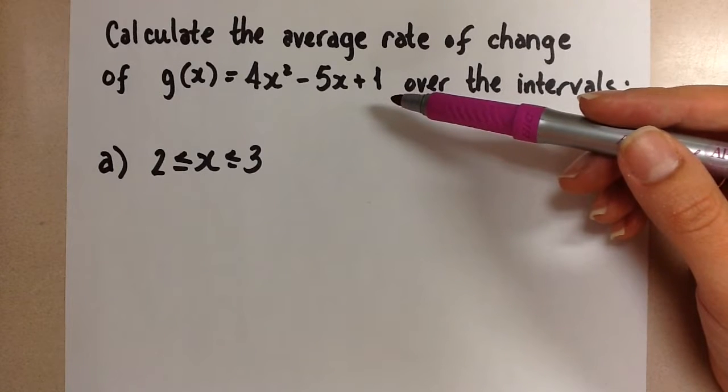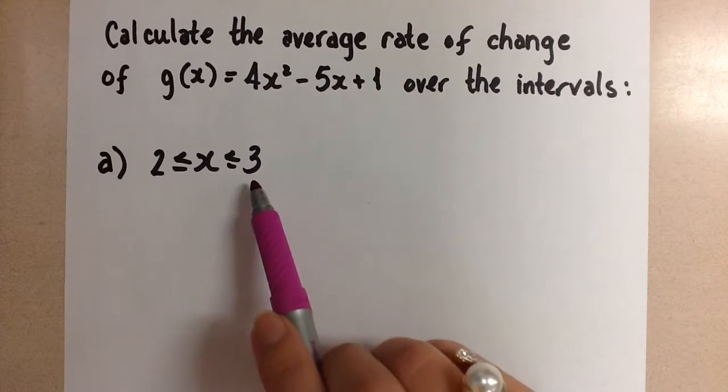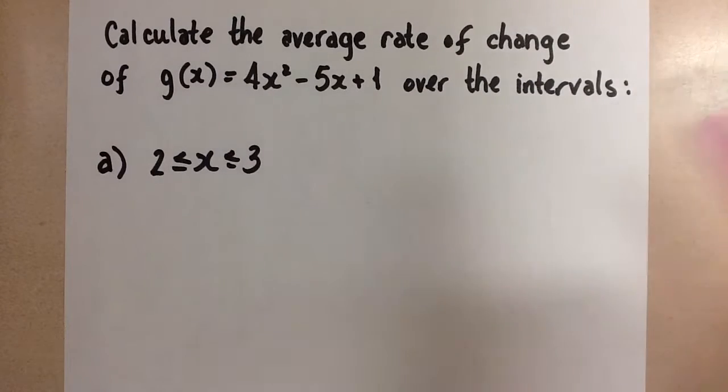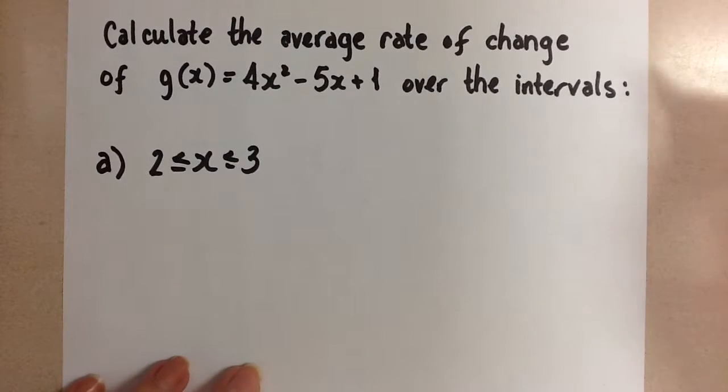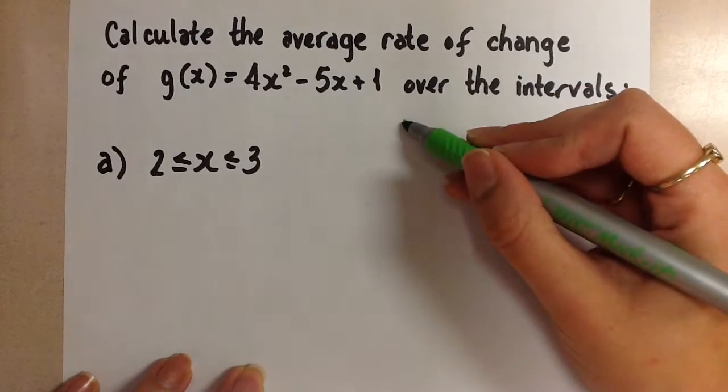So instead we find two points, in this case the points where x is 2 and x is 3, and we draw a straight line between those two points. That line is the secant line and that is the line that we want to find the slope of.